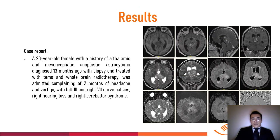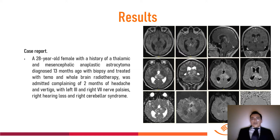Case report: A 28-year-old female with a history of a thalamic and mesencephalic anaplastic astrocytoma, diagnosed 13 months ago with biopsy and treated with Temozolomide and whole-brain radiotherapy, was admitted complaining of two months of headache and vertigo, with left third and right seventh nerve palsies, right hearing loss, and right cerebellar syndrome.